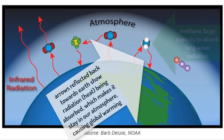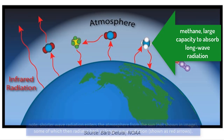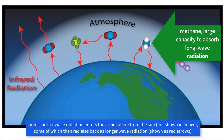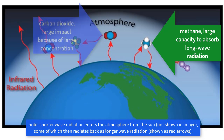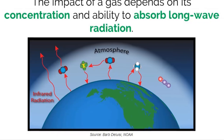Some molecules like methane have a large capacity to absorb long-wave radiation compared to carbon dioxide. But because methane exists in low concentrations and carbon dioxide exists in extremely high concentrations, carbon dioxide has a larger total effect on global warming. This calculation for a molecule is called its global warming potential.